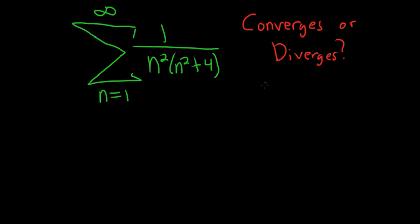So the intuitive way to do this, intuition should tell you that for large values of n, you can pretty much ignore the 4. So this is approximately equal to 1 over n squared times n squared. Well, n squared times n squared is n to the fourth.